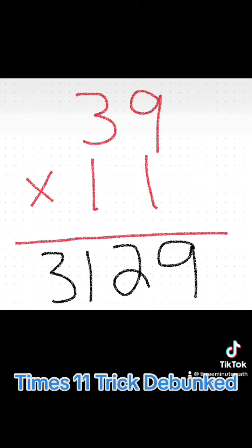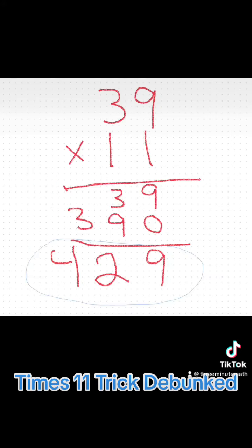That doesn't look right. If I use the standard algorithm, I can see that 39 times 11 is actually 429. So why didn't this trick work?